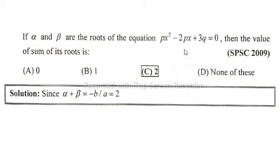the equation px² - 2px + 3q = 0, then the value of sum of its roots is. Solution: sum of roots, that is alpha plus beta, is equal to minus b over a.